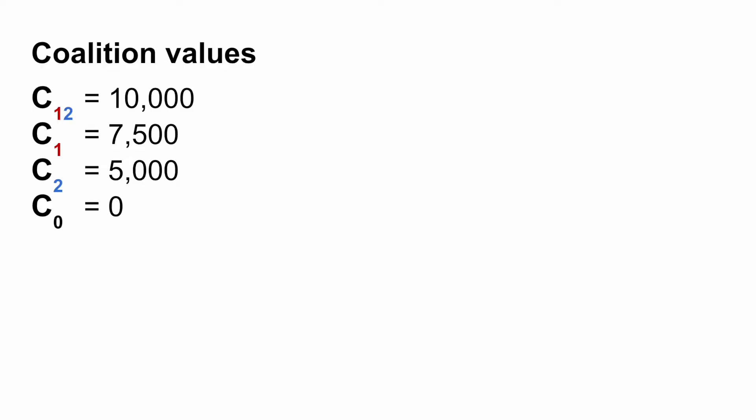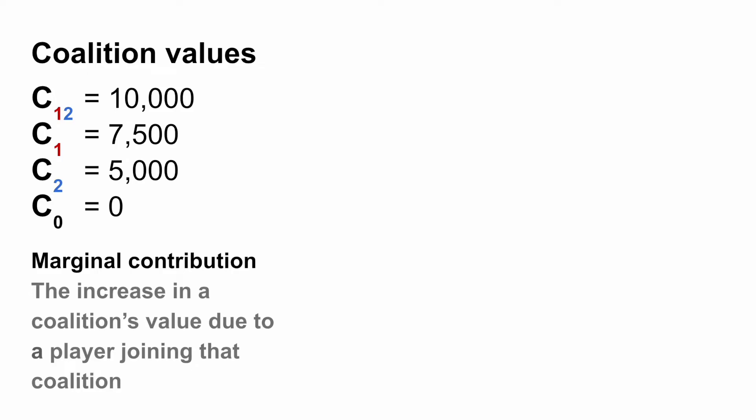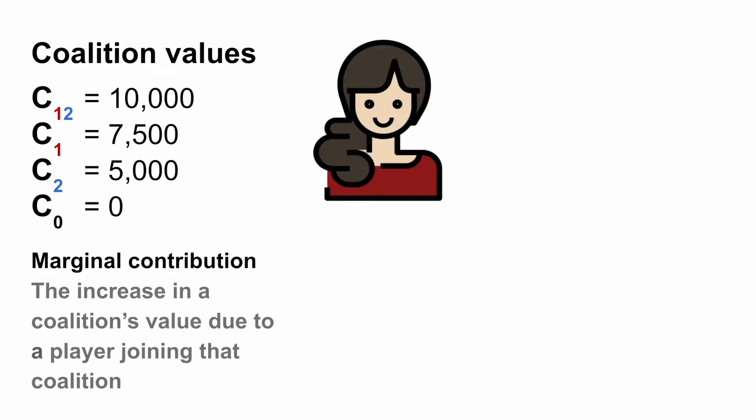However, it's still not clear how we should divide up the prize money. One way to do it is to calculate the expected marginal contribution of each player. To do this we start by calculating the marginal contributions of each player — these are the increases in prize money due to a player joining a coalition. Let's start with player one. They could join a coalition of only player two; in this case the coalition would go from third place to first place and the prize money increases by five thousand dollars. Player one could also join a coalition of no players and increase the prize money by seven thousand five hundred dollars.